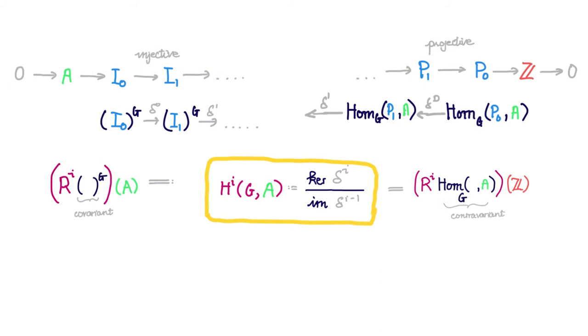We can actually do so by rethinking this cohomology group as the value of the right-derived functor of certain contravariant functor at Z. Here we are viewing Z as a trivial G module that is every element of G just fixes every element of Z.